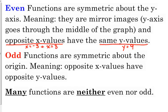Odd functions are symmetric about the origin. The thing to know is that opposite x values have opposite y values. For example, an odd function is y equals x. When we're talking about x equals negative 3 and x equals positive 3, the y values are negative 3 and positive 3, the same number just opposite signs.